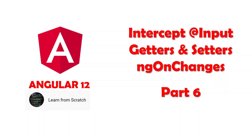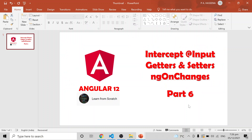Hi all. In the previous video I explained what the @Input property is. If I want to pass any data from the parent to child component, we use the @Input decorator. Then if any value changes in the parent component, and based on that change I have to do some functionality in the child component — how will I detect those changes? I will explain all the scenarios in this video, mainly two scenarios.